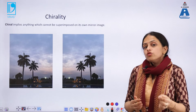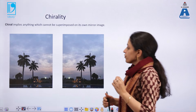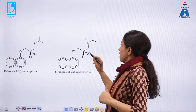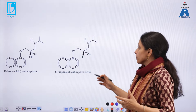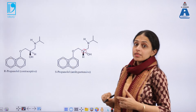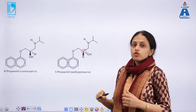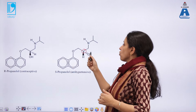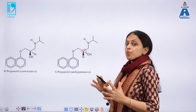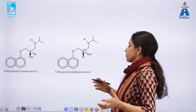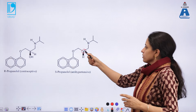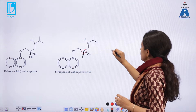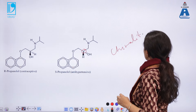To study stereoisomerism specifically, one must understand the concept of chirality. If a molecule is optically active, it must possess something known as a chiral center. A chiral center is a carbon where all the atoms connected to it are different, present at an angle of 109.8 degrees — the tetrahedral angle — and this carbon can be called a chiral carbon.